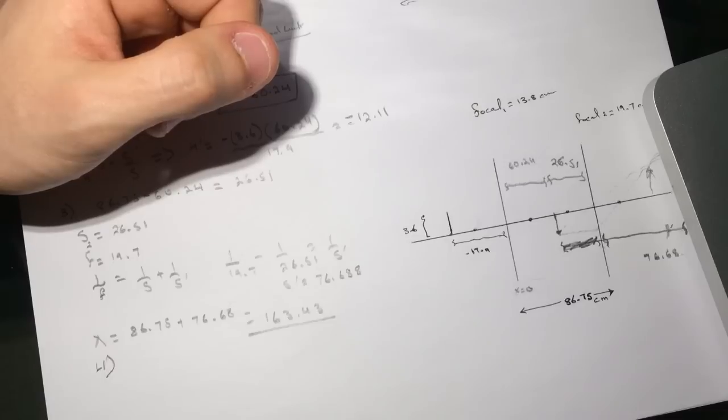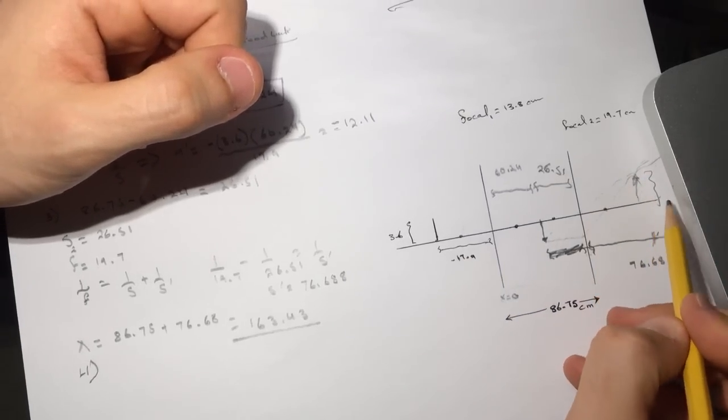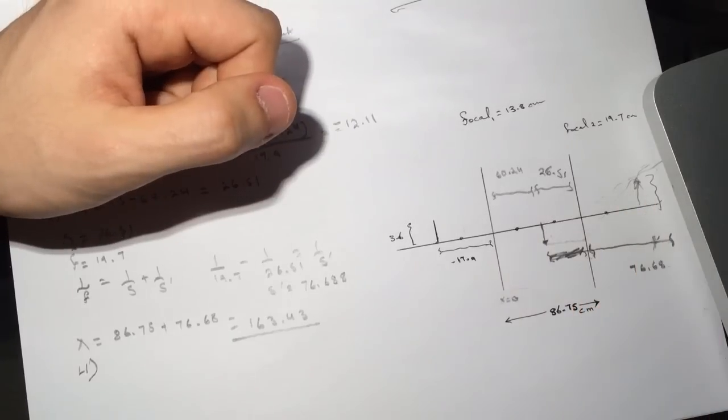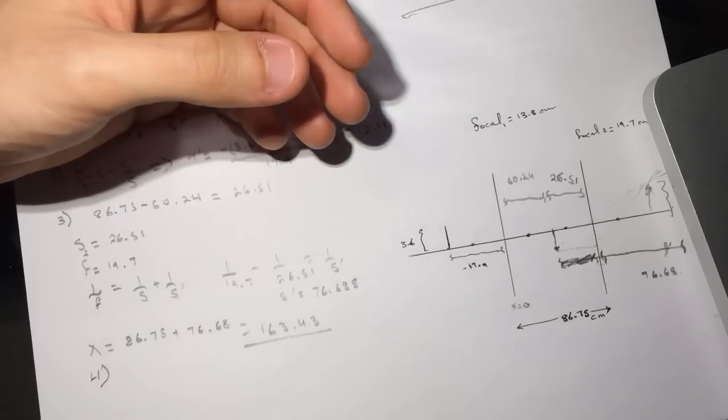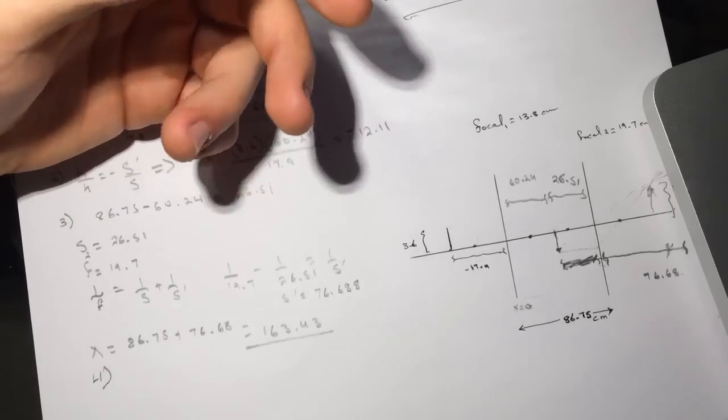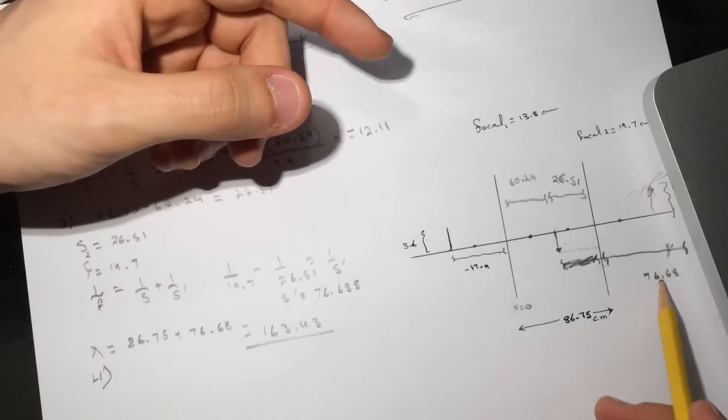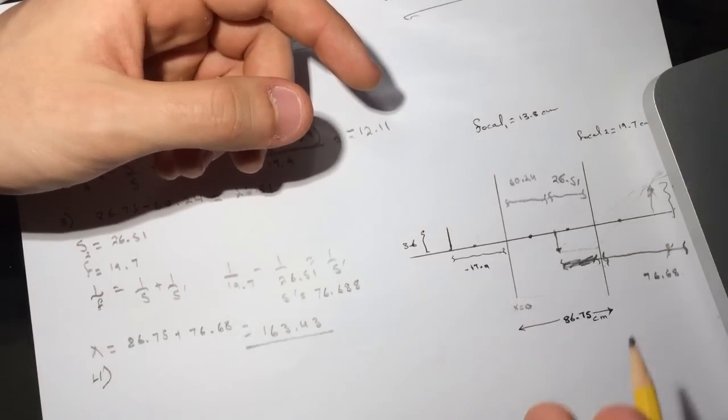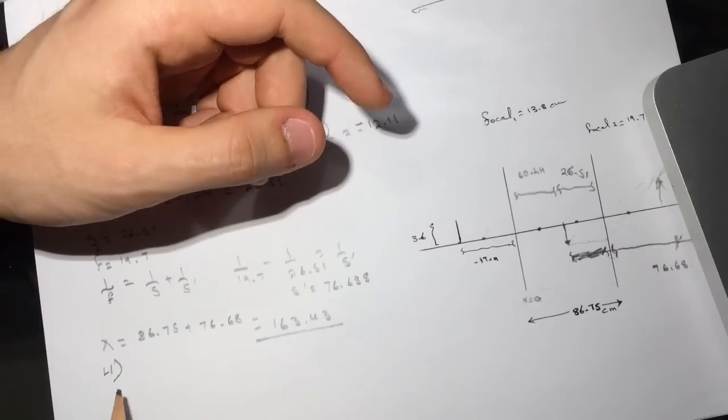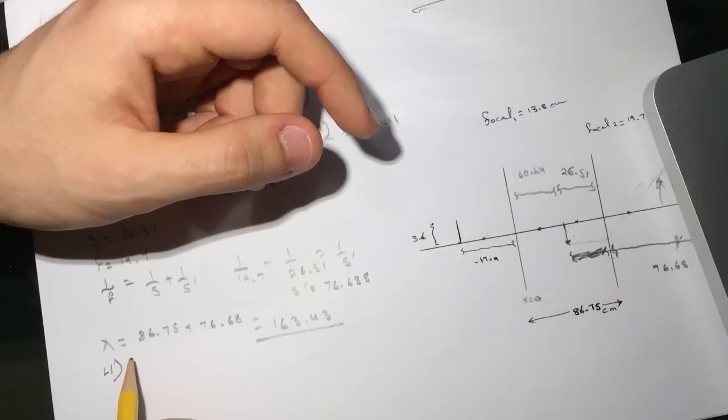Number four is what is the y3? They want to know the y here. We know here that it's going to be positive, right? And it's going to be somehow bigger than the original because the distance here is way farther. So it has to be bigger.